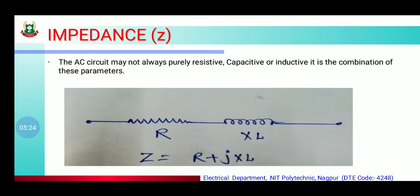आप यहाँ पर देख रहे हो — यहाँ पर एक resistance connected है और दूसरा है inductive reactance. तो impedance का formula मिलेगा R + jXL, जहाँ R is for resistance and XL is for inductive reactance. R is the real part and XL is the imaginary part, क्योंकि XL के सामने j दिखाई दे रहा है। Impedance is the addition of real part and imaginary part।